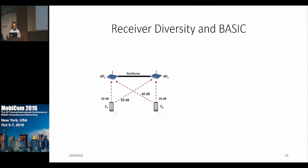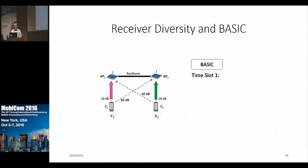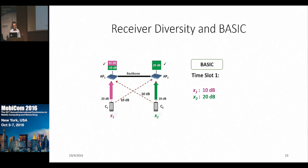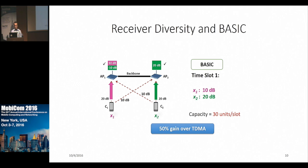However, we can leverage the backbone connecting the two APs to improve throughput. In our protocol, BASIC, both clients transmit at the same time. At AP1, we decode client 1's packet, then send that decoded packet through the backbone to AP2, where it is subtracted out, and then client 2's packet is decoded. In this case, client 2 gets 20 dB of SNR, so the capacity is now 30 units per slot — a 50% gain over TDMA.